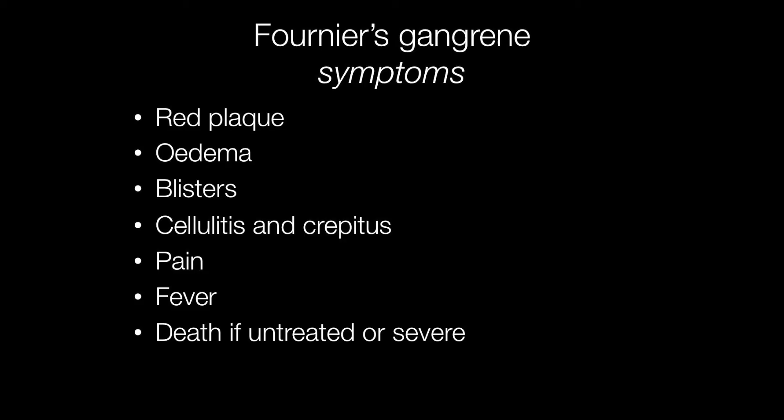Signs and symptoms of Fournier's gangrene include initially a red plaque developing with edema. Blisters may form with cellulitis and crepitus. Crepitus is caused by the presence of gas forming bacteria that produce bubbles of gas under the skin. Fournier's gangrene may cause pain, fever and in untreated and severe cases it may be fatal.